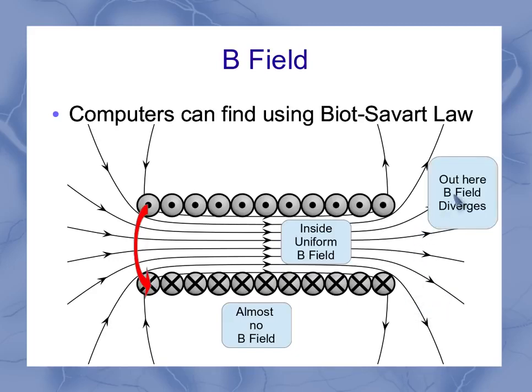Over here on the edges, that uniform field starts to diverge as it's going out. So while it's really uniform inside the solenoid, as soon as you get towards the edge of the solenoid, you start to see those magnetic field lines spreading apart. But in general, it comes out one side and back in the other side, and you've got a uniform magnetic field in the region in between.